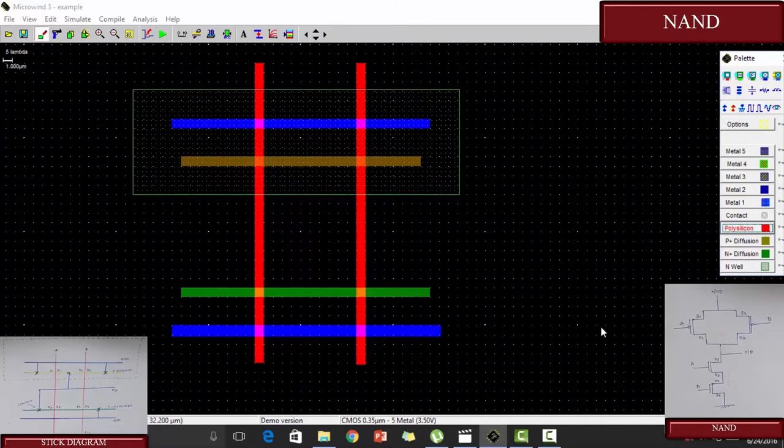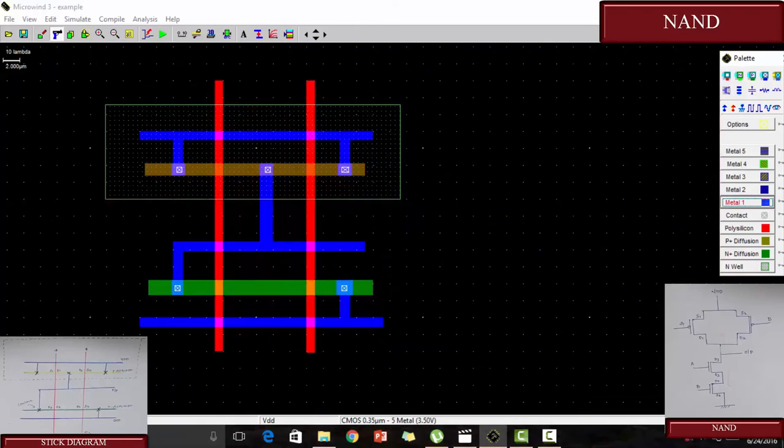Now let us construct the polysilicon through which we are going to give our input. The polysilicons are constructed. As we have two inputs, we have two polycontacts given.